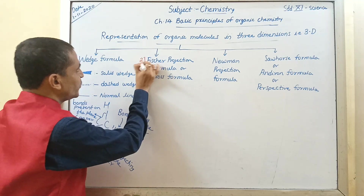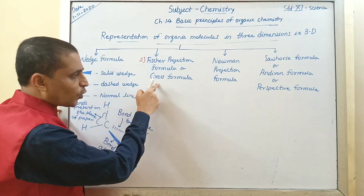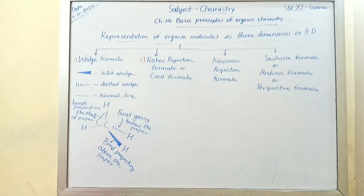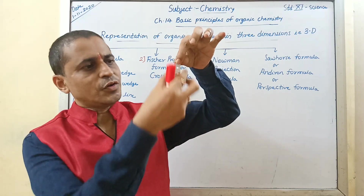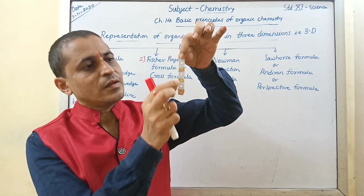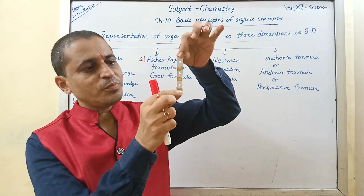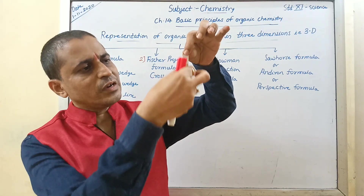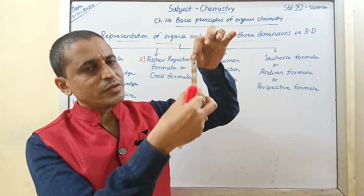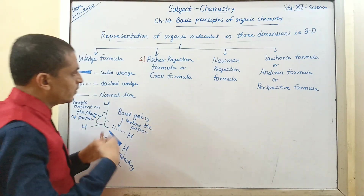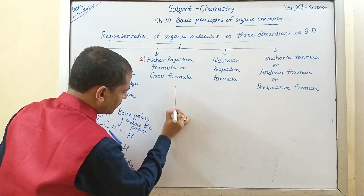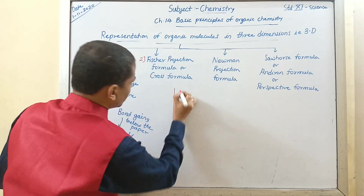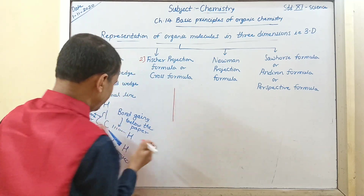Now come to the second method: Fischer projection formula, which is also called as cross formula. This vertical line represents what? Carbon chain. Remember that — this can be drawn by a single vertical line, which represents the carbon chain.